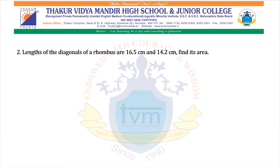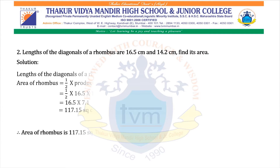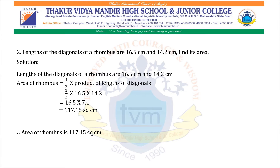Question 2: Lengths of the diagonals of a rhombus are 16.5 cm and 14.2 cm. Find its area. Solution: Area of rhombus = half into 16.5 into 14.2 = 16.5 into 7.1 = 117.15 square centimeters. Therefore, area of rhombus is 117.15 square centimeters.